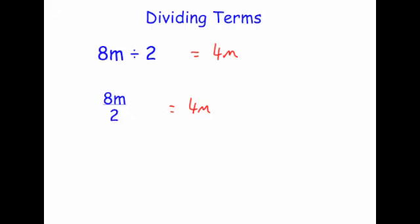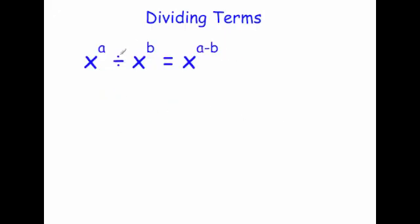Before we carry on, it's very important we know the laws of indices. Whenever you're dividing, if you had x to the a divided by x to the b, it's equal to x to the a minus b. So if you've got the same base number and you're dividing, you just take away the powers. For example, y to the 5 divided by y to the 2 — you take away the powers so it'll be y to the 3.